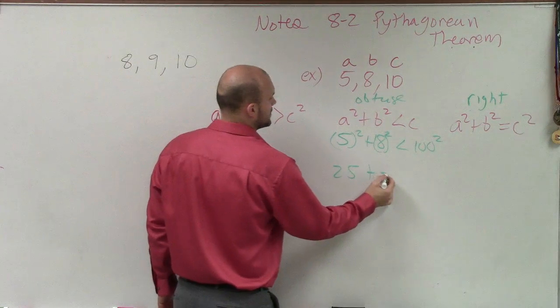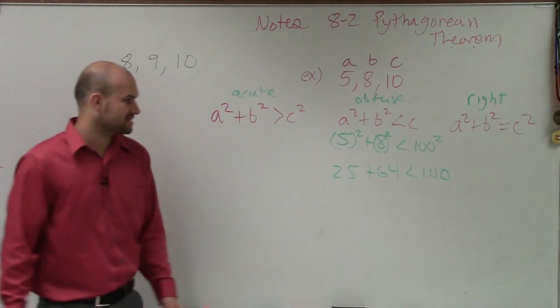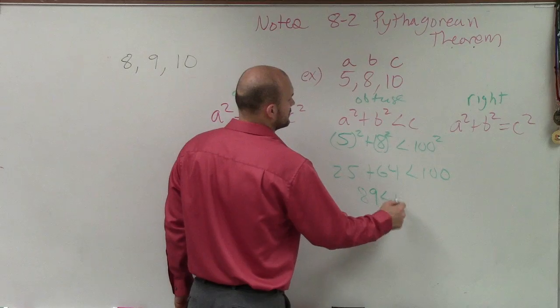So I have 25 plus 64 less than 100. 25 plus 64 is 89, which is less than 100.